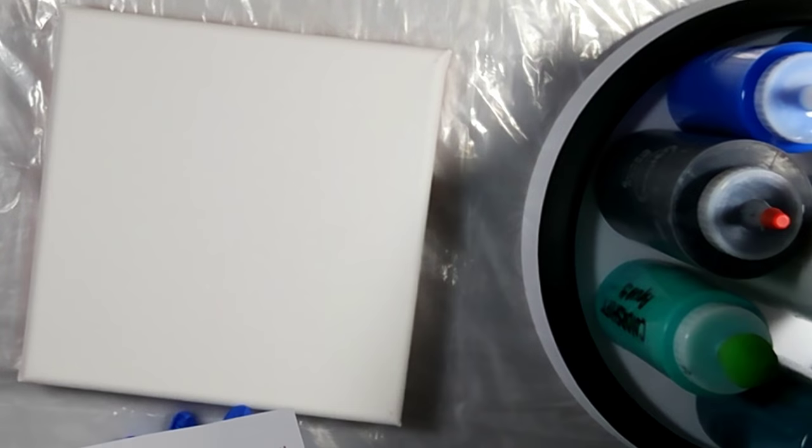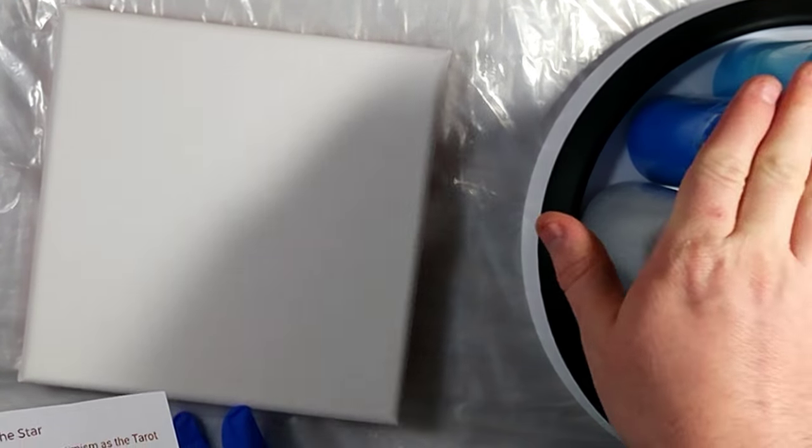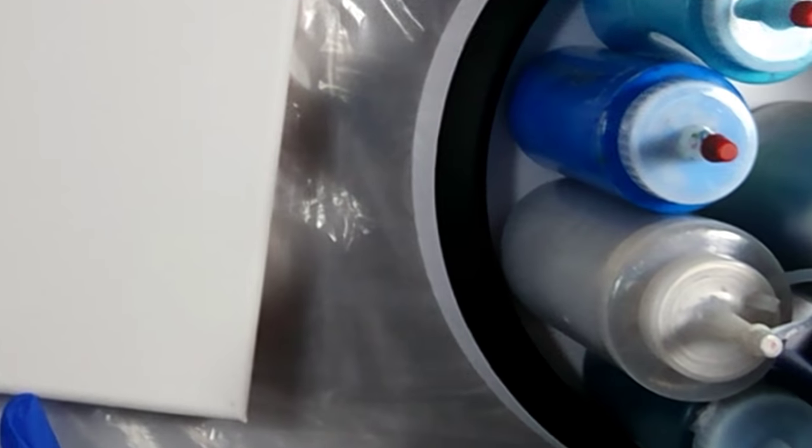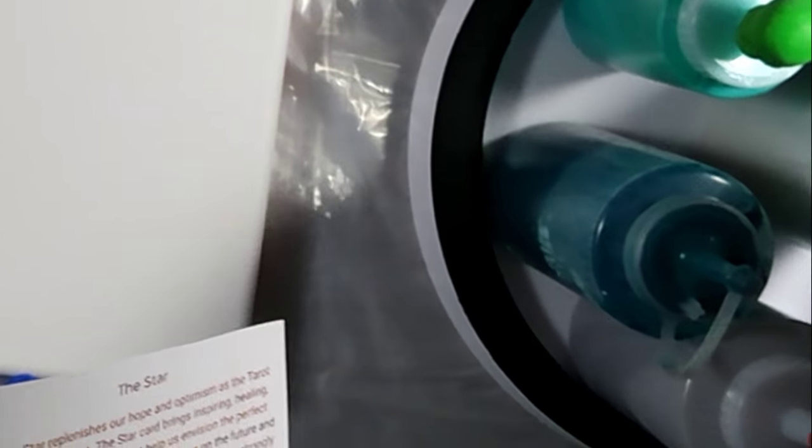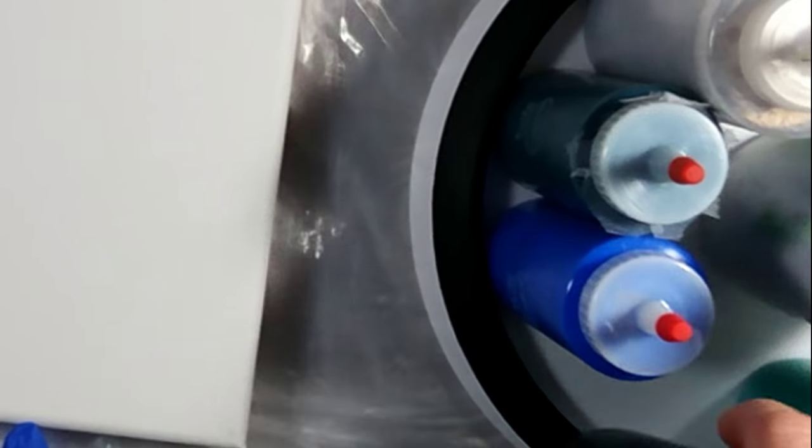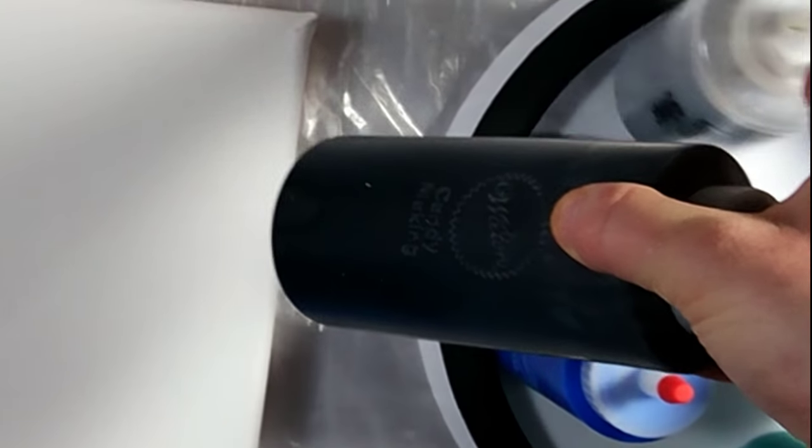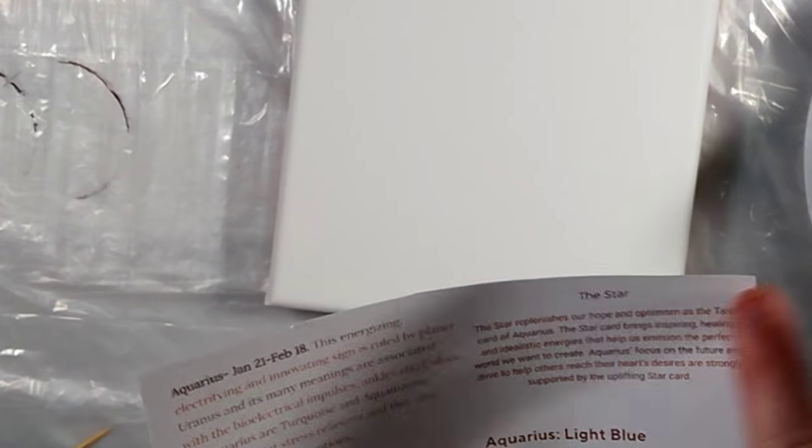It talks about the planet and the modern ruler which was Uranus, which is the electric blue. Then it talks about the traditional ruling planet for Aquarius which was Saturn, and it talks about blacks and silvers. So I grabbed some black and I grabbed some silver, added it to the list.